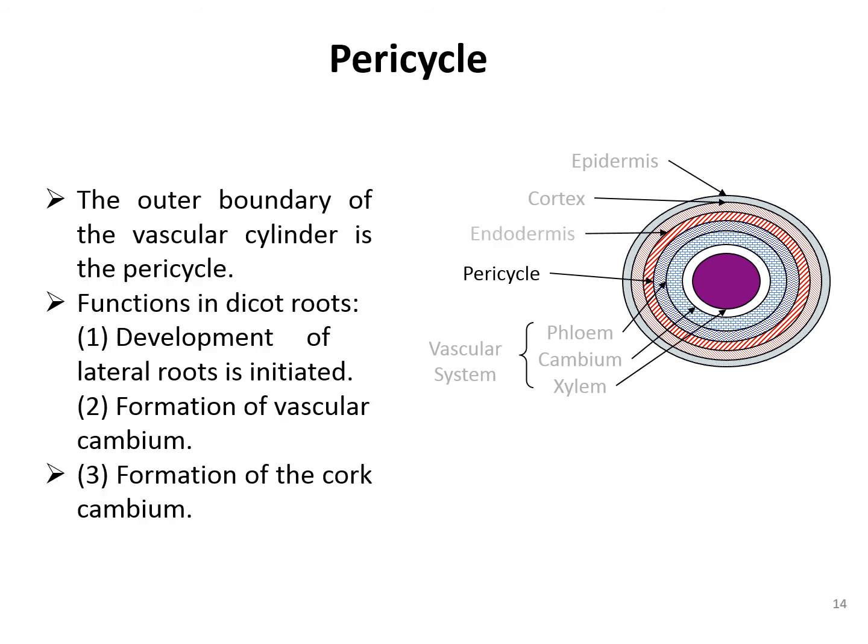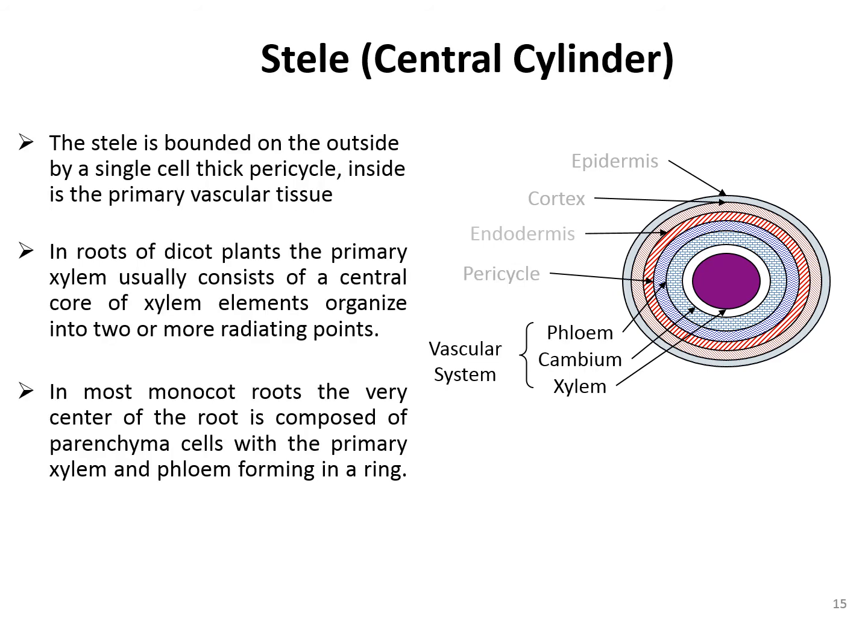Next is the pericycle. The outer boundary of the vascular cylinder is the pericycle. It has three main functions in dicot roots: it is the site where development of lateral roots is initiated, it contributes to the formation of vascular cambium, and it also contributes to the formation of cork cambium. In monocot roots, no secondary growth occurs, so pericycle is only involved in lateral root initiation. The stele is bounded on the outside by a single-cell-thick pericycle, and inside is the primary vascular tissue. In dicot roots, primary xylem consists of a central core organized into two or more radiating points, described as tetrarch. In most monocot roots, the very center is composed of parenchyma cells with primary xylem forming a ring, described as polyarch.